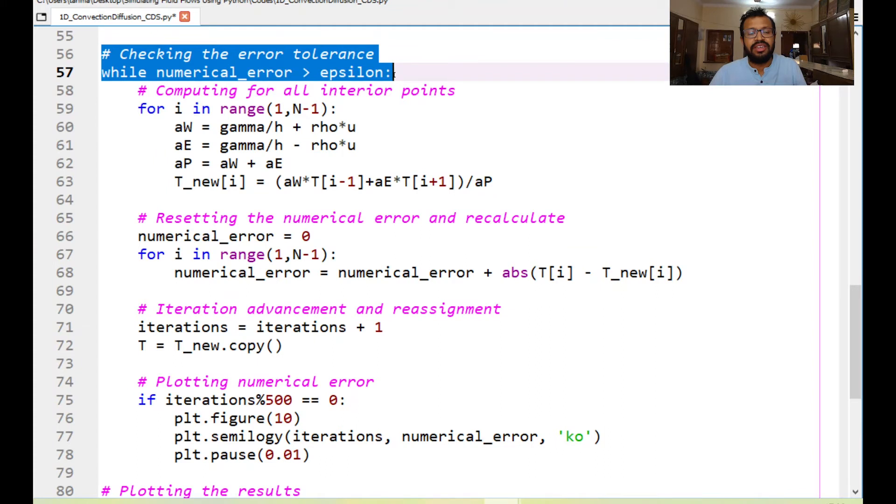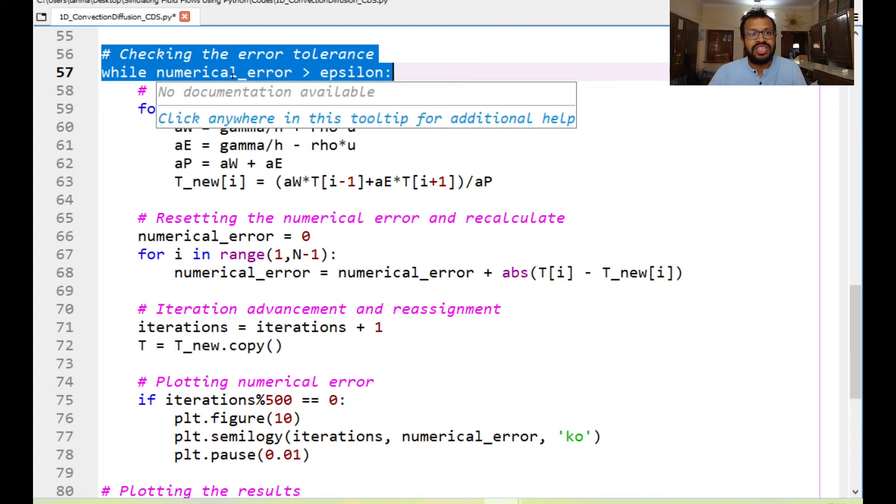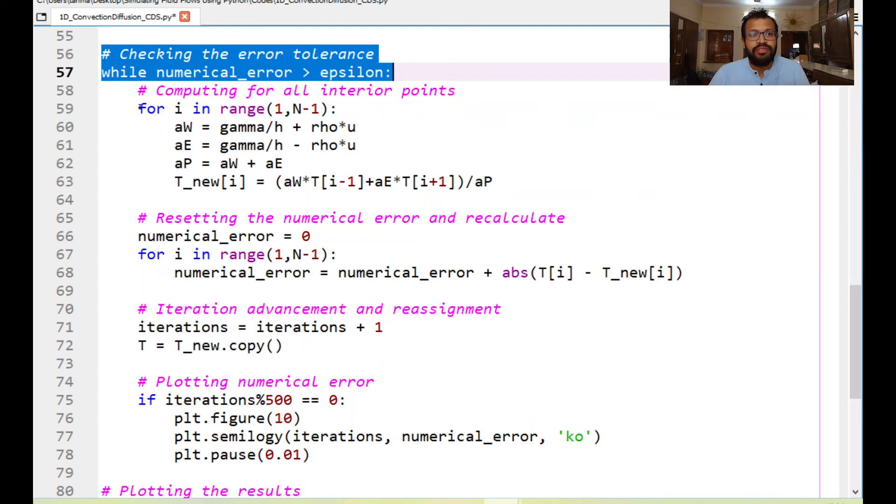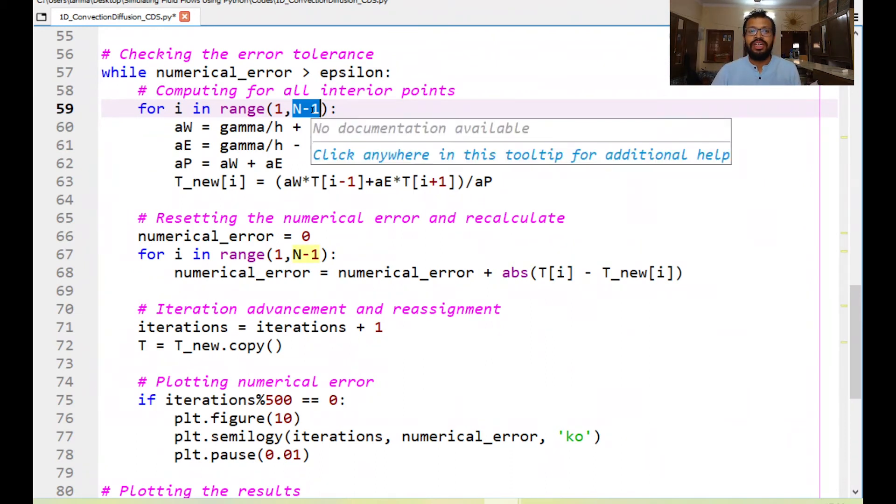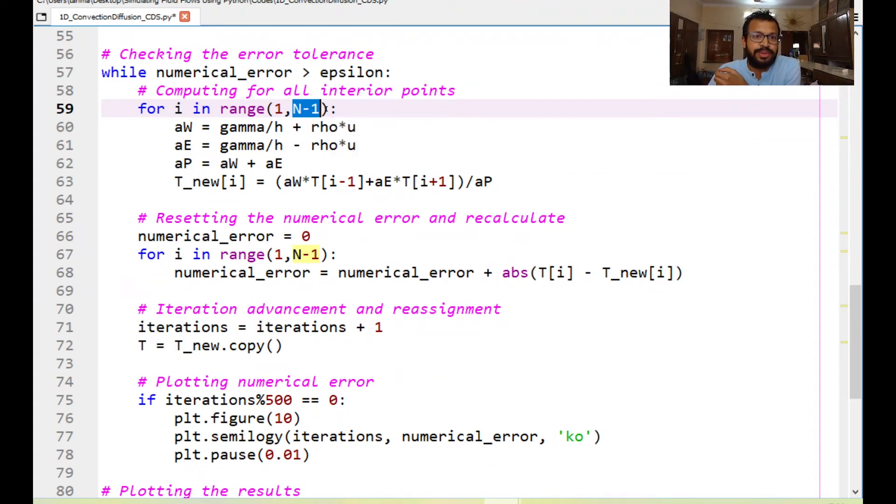So as long as the error is greater than epsilon that is the threshold we do the calculations for i in the range of 1 to n-1 and here more importantly this n-1 is not included. So you might want to refer to the videos over here where I am talking more about the indexing system that is being used in Python.